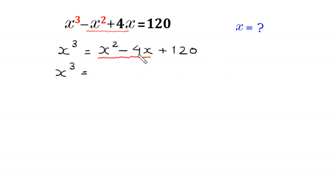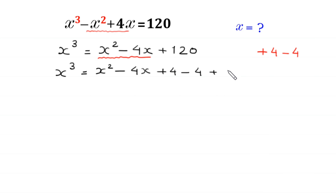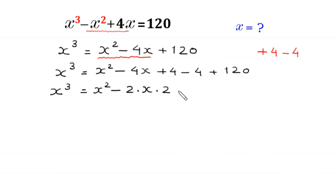Next, we want to make the expression x squared minus 4x a perfect square. To do this, we add and subtract 4: x squared minus 4x plus 4 minus 4 plus 120. We can write 4x as 2 times x times 2, giving us x squared minus 2 times x times 2 plus 2 squared, and negative 4 plus 120 equals positive 116.